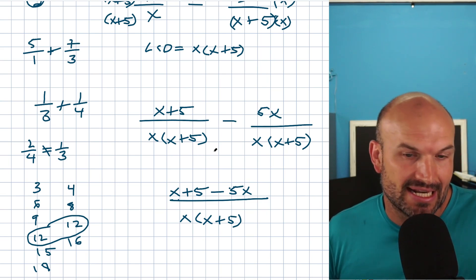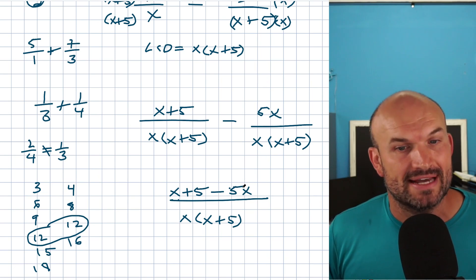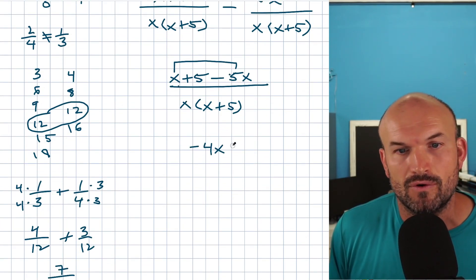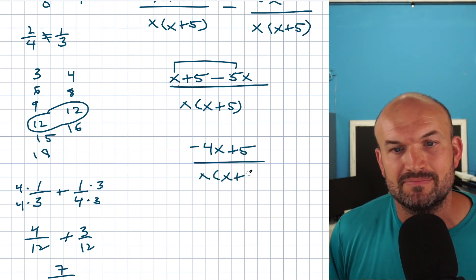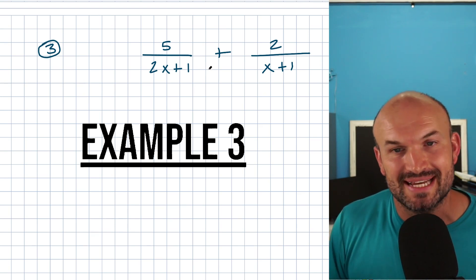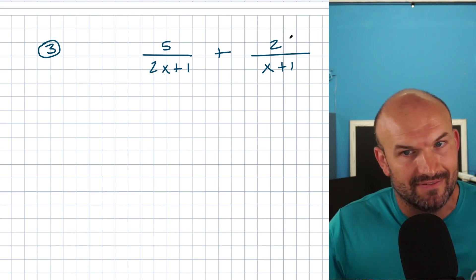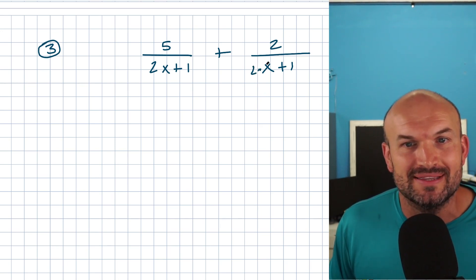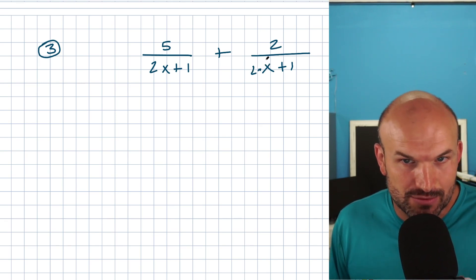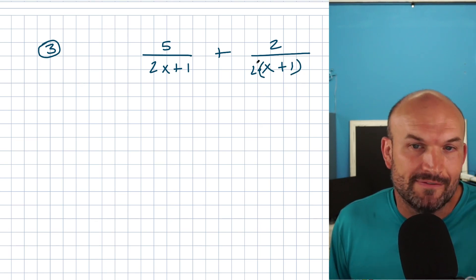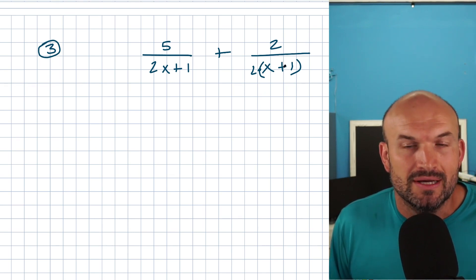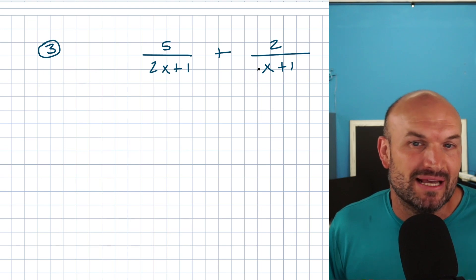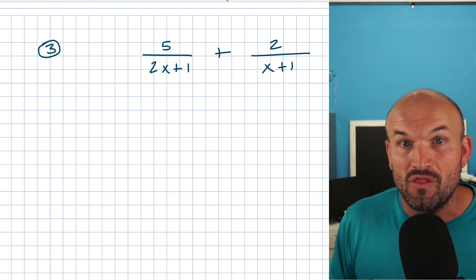Now let's look at one last example where students make mistakes time and time again. They see 2X plus one and X plus one and say, I need to multiply — so why not just multiply by two on top? It's a great idea, but you can't just multiply the two times X because whenever you have an expression, you have to multiply by two times both terms. Two times X plus one gives you 2X plus two, not 2X plus one. So multiplying by two just to the X is not going to work.